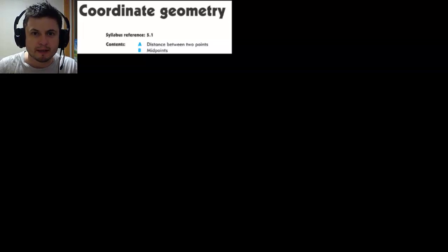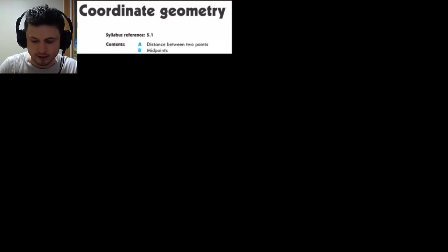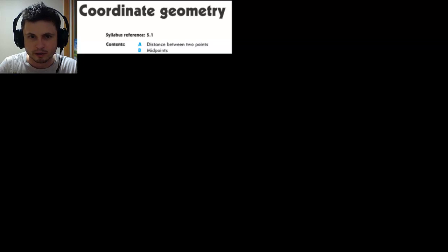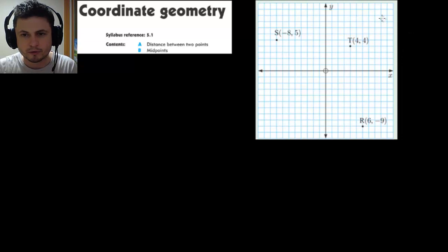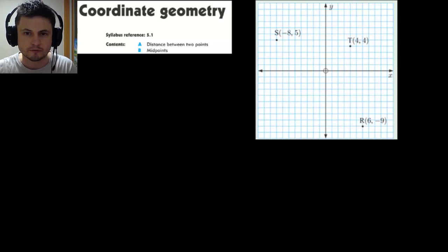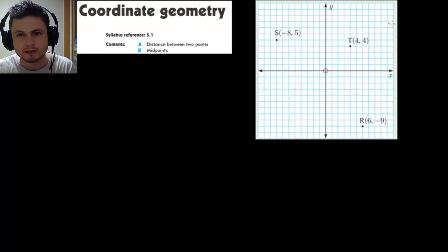Hello YouTube and welcome to What the Math. In today's video we're going to be starting Chapter 13 of IB Math Studies, specifically called coordinate geometry. This is actually one of my favorite chapters because it's so awesome, easy, and visual. The coordinate plane is also known as the Cartesian plane, named after René Descartes, the French philosopher who invented various things for mathematics and philosophy.